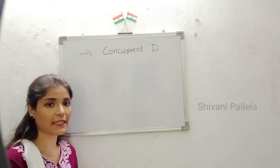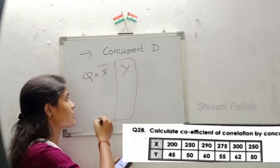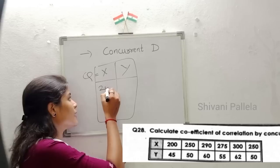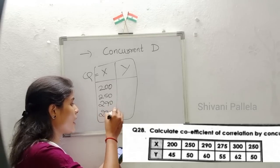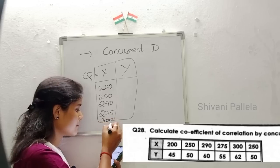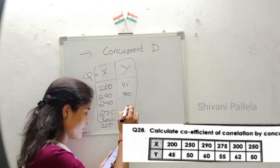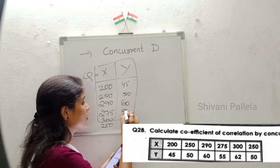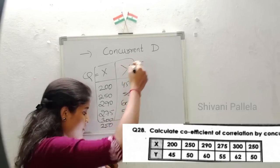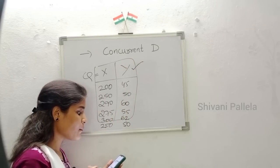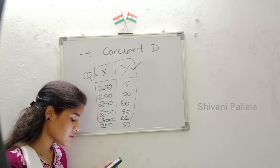Now we will discuss the examination question. The question gives X and Y values: X is 200, 250, 250, 290, 275, 300, 250 and Y is 45, 50, 60, 55, 62, 50. They have asked to calculate the coefficient of correlation by the concurrent deviation method.